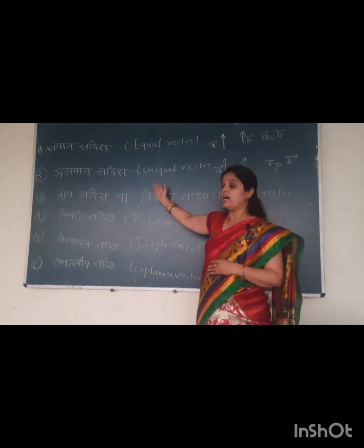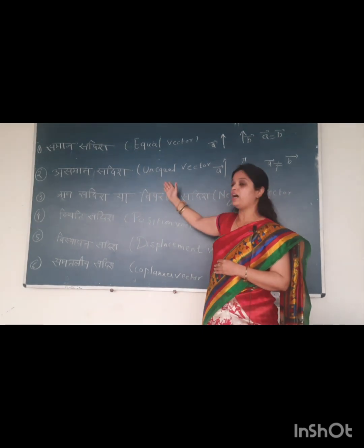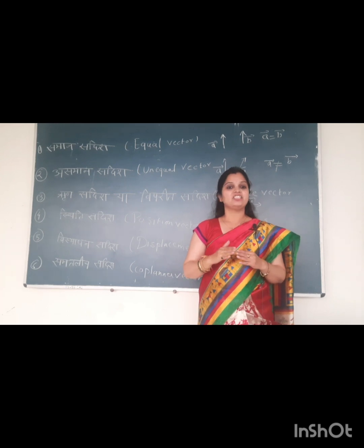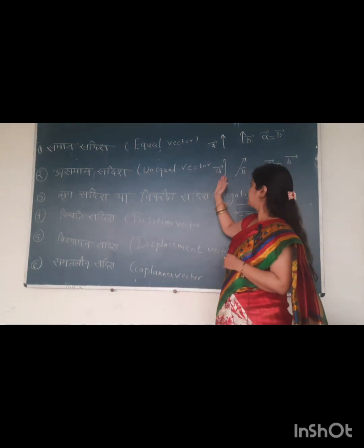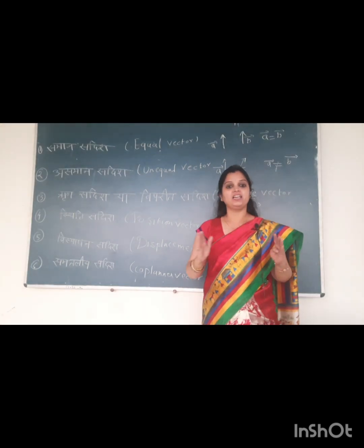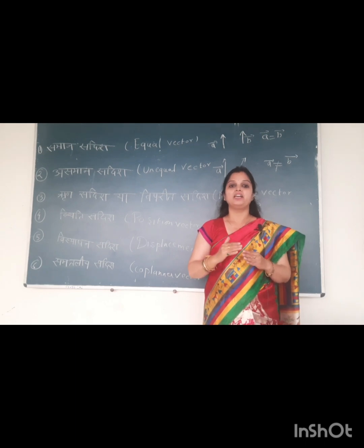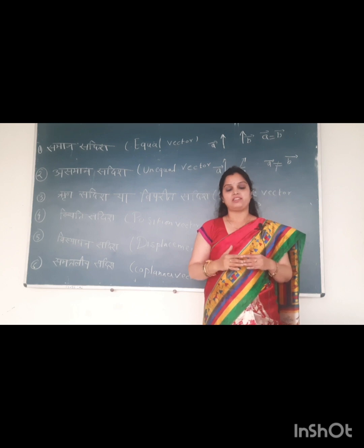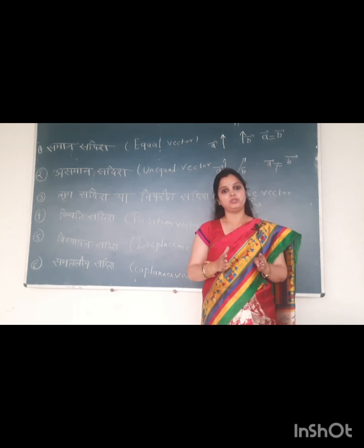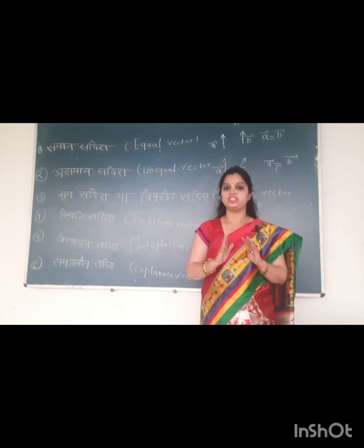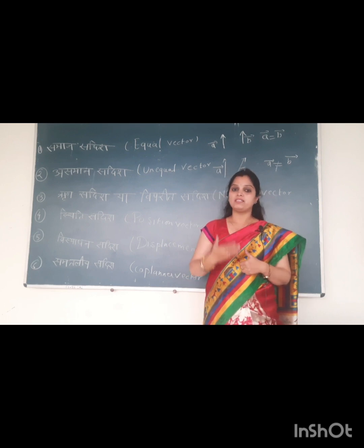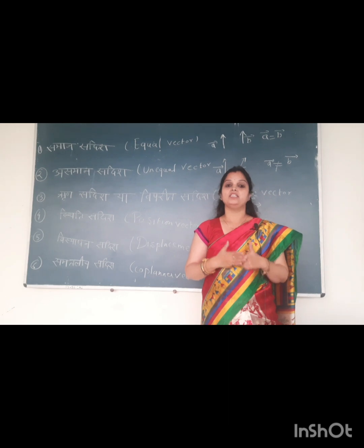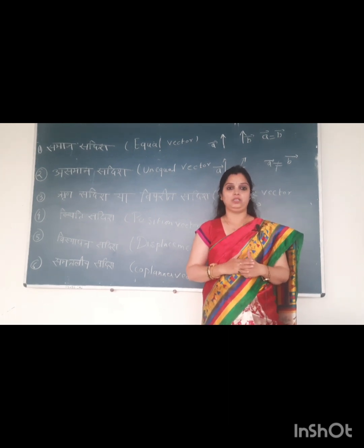The second type of vector is unlike vectors (a-saman sadish), also called unequal vectors. As the name suggests, these are not equal. These are vectors whose directions are not the same — they do not travel in the same direction. Unlike vectors have the same magnitude but their directions are different. So unlike vectors are those whose magnitude is the same but whose directions are different.